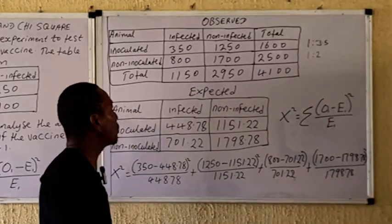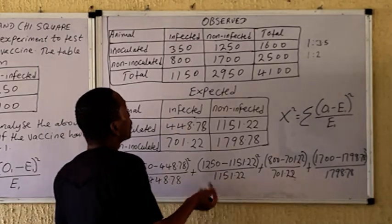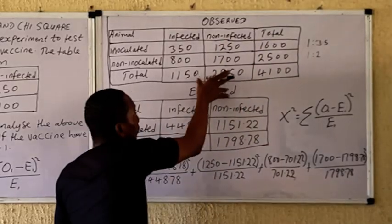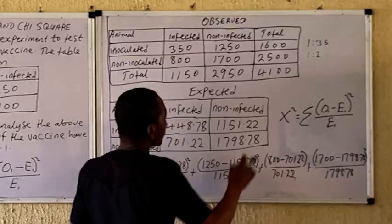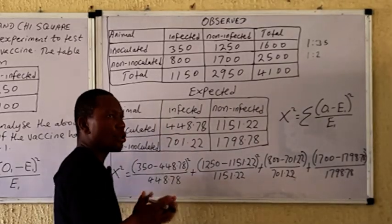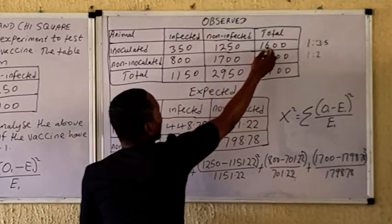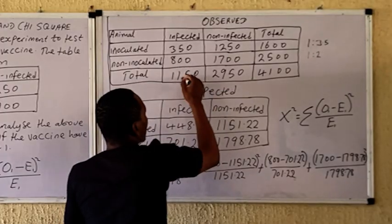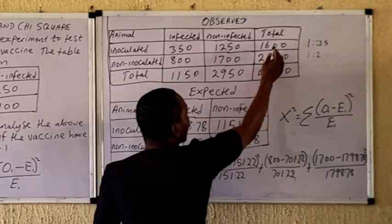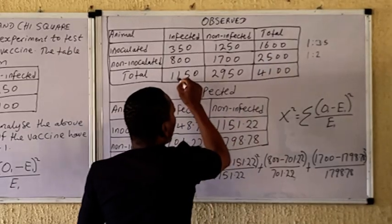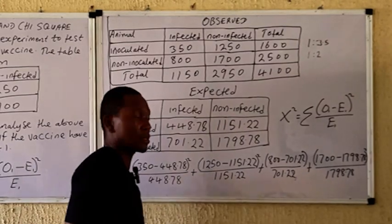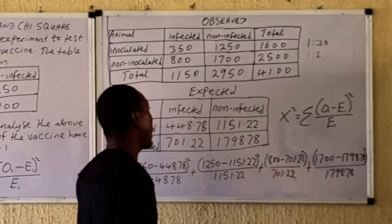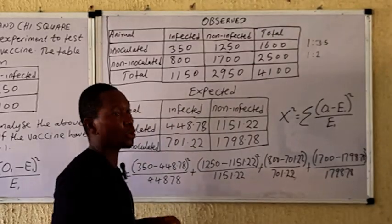The observed value is the one given in the question. You set up your table with the row totals, column totals, and the overall total. Once you have done that, you have all your observed values. The total number of individuals subjected to the trial is 4,100. This gives us the observed values for all four cells in the two-by-two table.